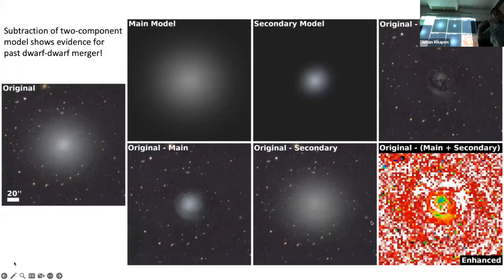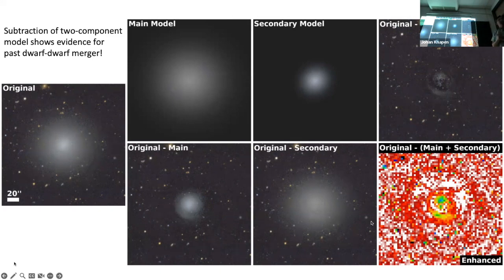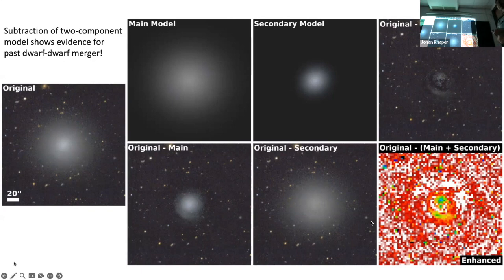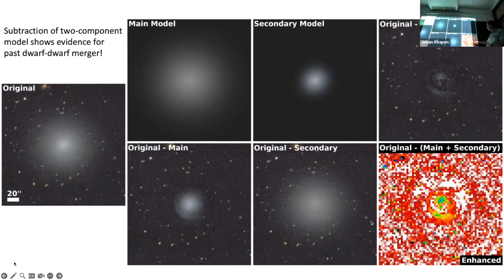If you take those surface brightness profiles and make them into model galaxies, the main component gives you the outer structure, and the secondary component gives you a little central feature. If you subtract both of them, you see in the top right panel some structure not modeled by these two Sérsic components — kind of shells near the center, and also something further out. There is structure in this galaxy which is not modeled by smooth Sérsic components, and this tends to indicate past interactions. The lower right is an enhanced version with colors cranked up to show there is indeed structure there.